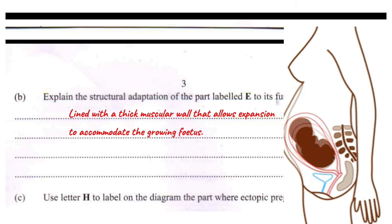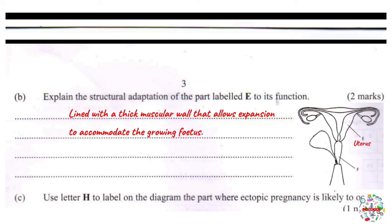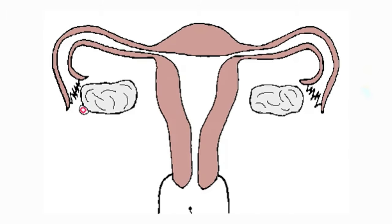Moving on to part C: use letter H to label on the diagram the part where ectopic pregnancy is likely to occur. Before tackling this question, we need to know what ectopic pregnancy is about. Ectopic pregnancy is a pregnancy whereby the fertilized egg implants and grows in the fallopian tube.